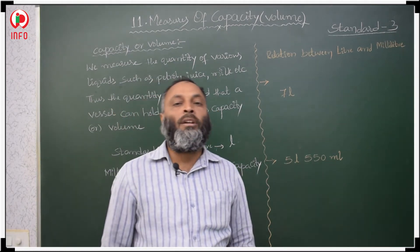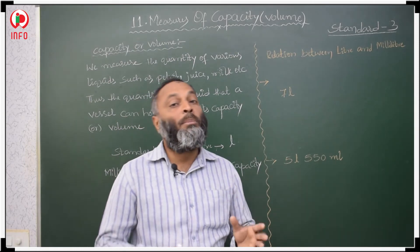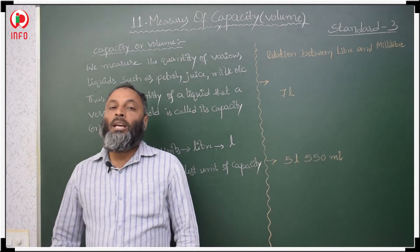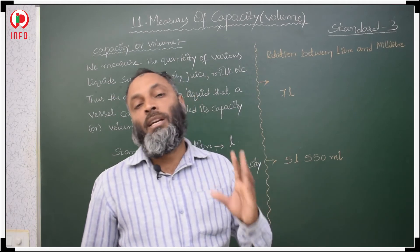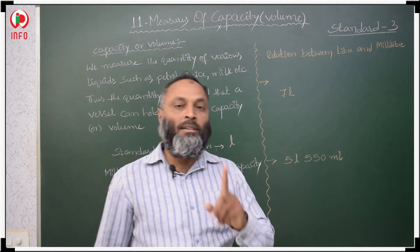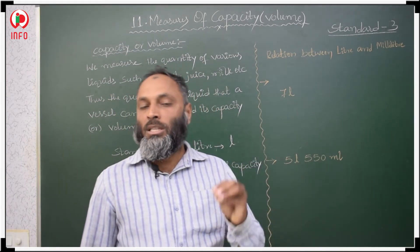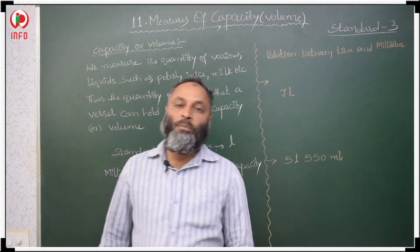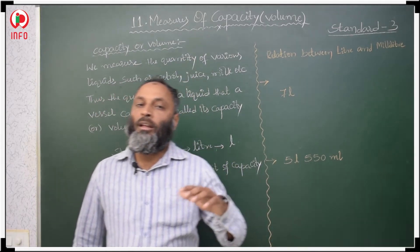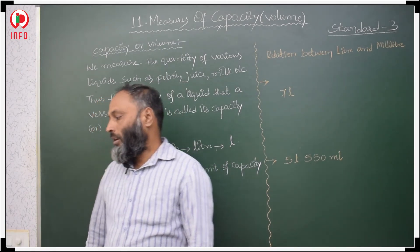If a big container can hold 5000 liters of petrol, then the capacity of that petrol container is 5000 liters. Whatever liquid an object holds — that is the capacity, that is nothing but volume. The maximum quantity of liquid a particular object contains is its volume.